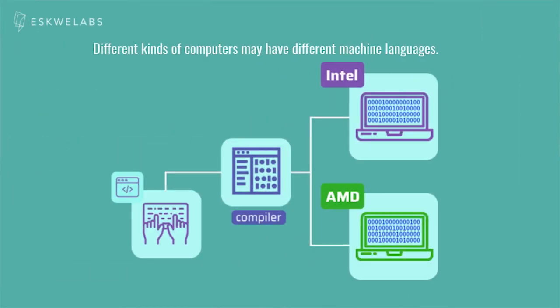Computers can only understand machine language, which is in zeros and ones, and it would be very annoying for us to have to speak to the computer in machine language. So we need an intermediate language to communicate with machines, which is what we call high-level programming languages, or simply programming languages. One fun fact is that computers don't actually understand programming languages directly.